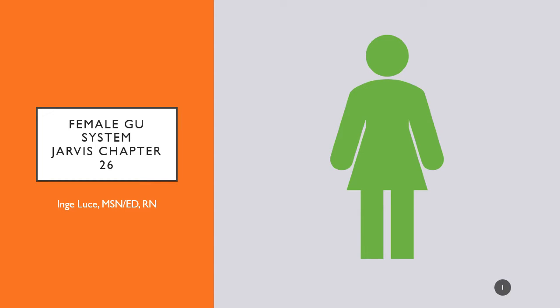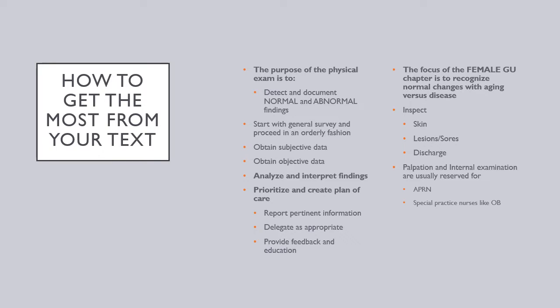Chapter 26 in Jarvis focuses on assessment of the female genitourinary system. In addition to reviewing normal and abnormal findings and practicing subjective and objective data collection, focus on normal changes with aging and how to differentiate those from disease processes. We will cover inspection of the skin, lesions, sores, discharge, palpation, and internal examination, although these are usually reserved for advanced practice RNs and specialty nurses like OB.